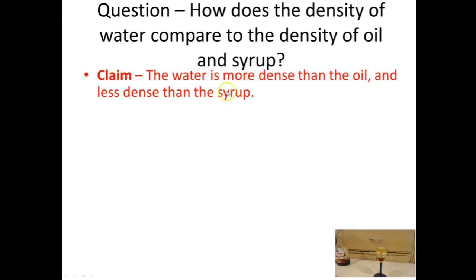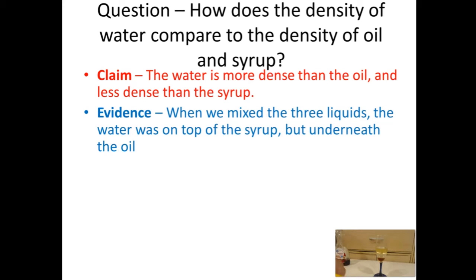How do I know this is true? Let's look at my evidence. Typically your evidence would be writing down what you saw — that the oil is here, the water is here, and the syrup is here. But the evidence is: when we mix the three liquids, the water is above the syrup, but the oil is above the water, or the water is underneath the oil. That's our evidence. Now, what does this really mean? To someone who doesn't know much about density, this evidence makes no sense. How does this prove that the water is more dense than the oil but less dense than the syrup?